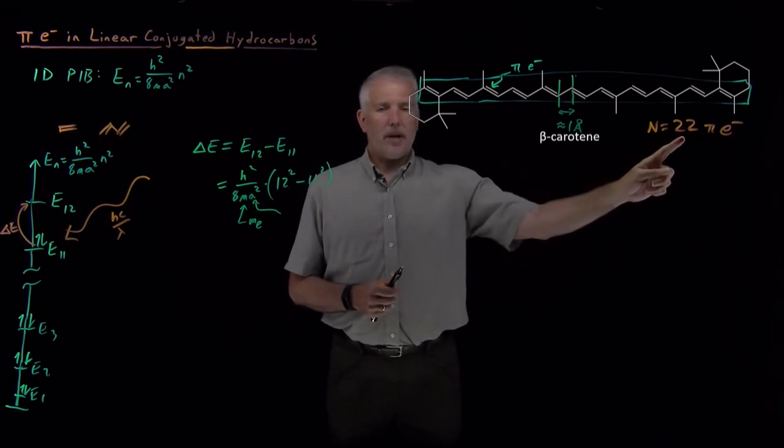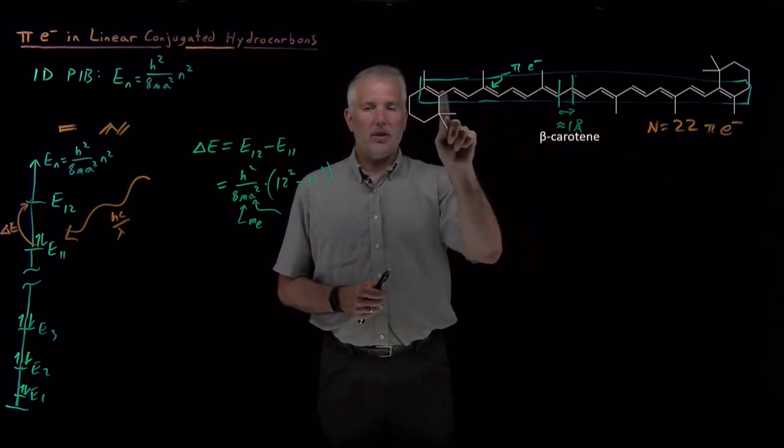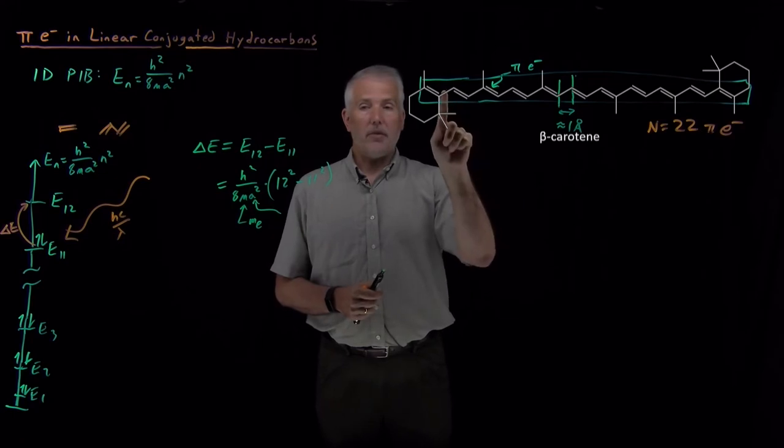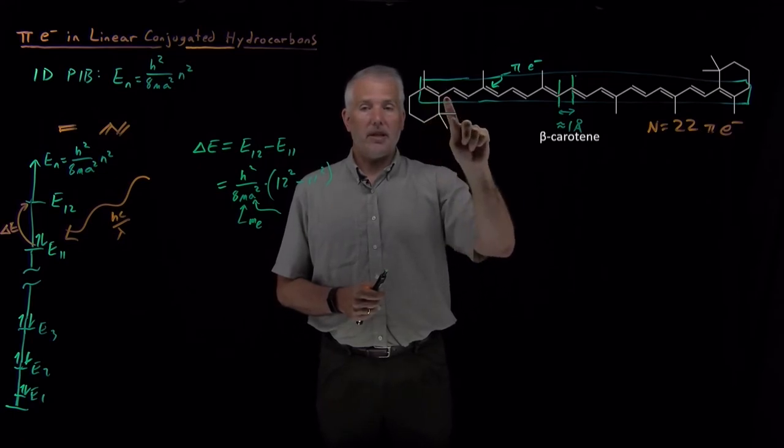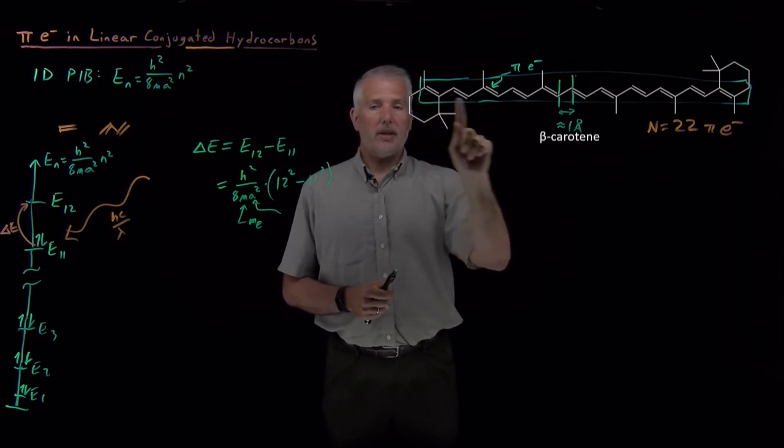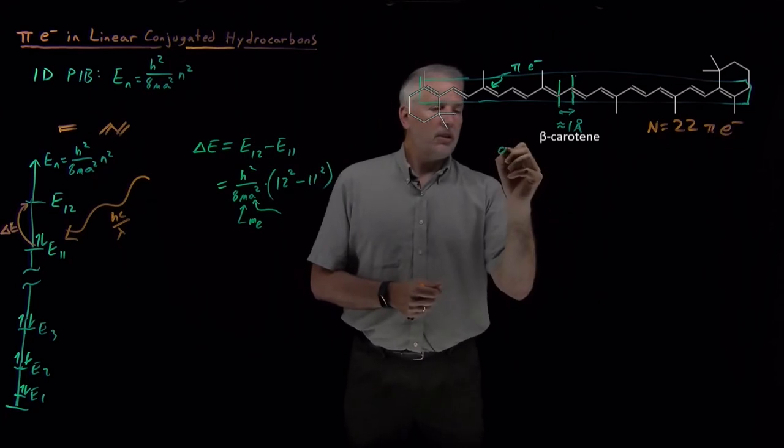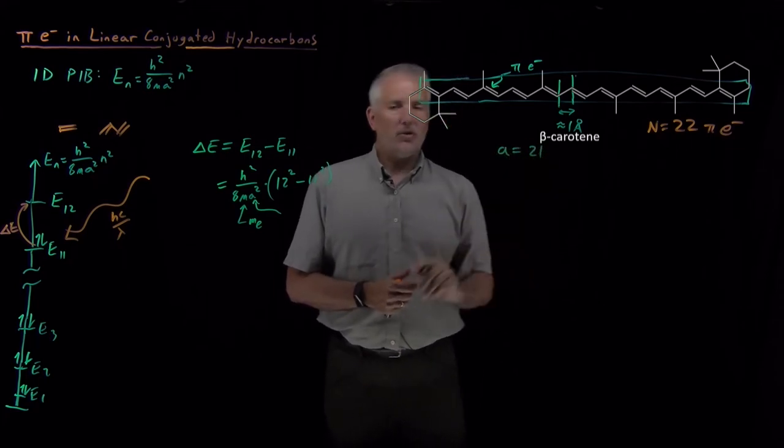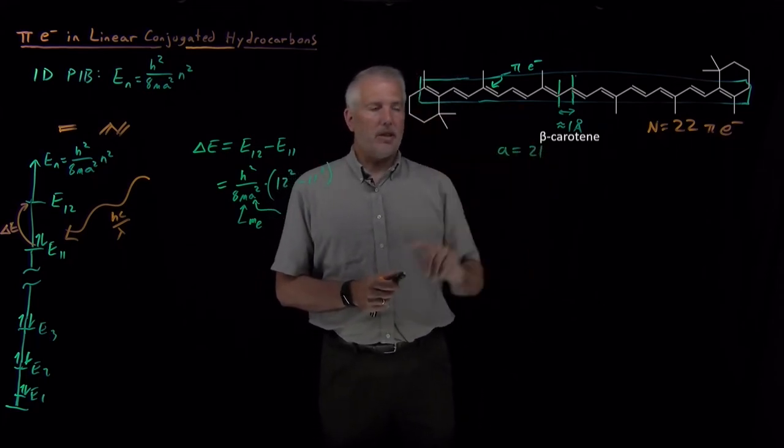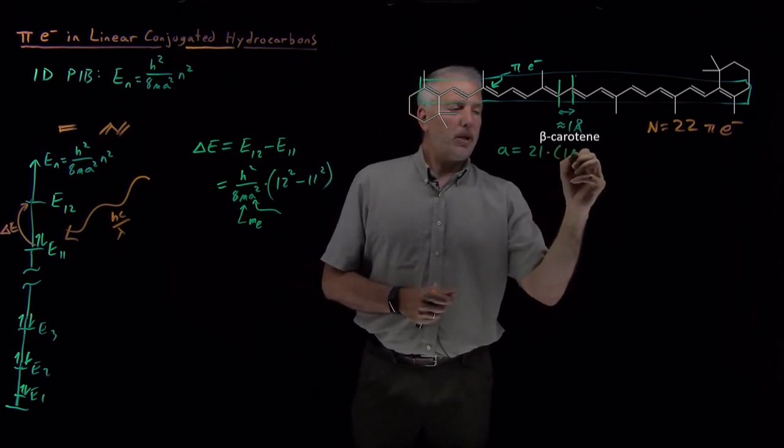Because our backbone has 22 electrons, 11 pi bonds. So there's 11 of these pi bonds, and there's 10 of the single bonds in between them, because it ends with a pi bond on this side and a pi bond on that side. So the total length of the molecule is going to be those 21 bonds, 11 doubles and 10 single bonds multiplied by 1 angstrom.